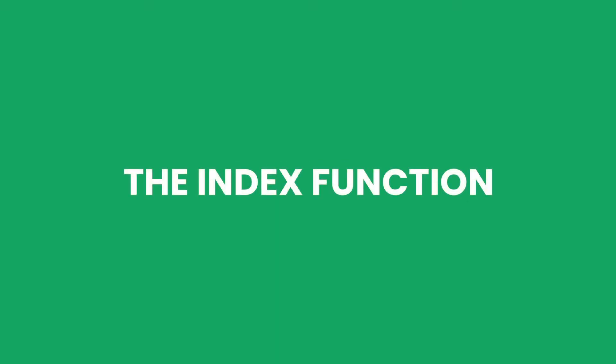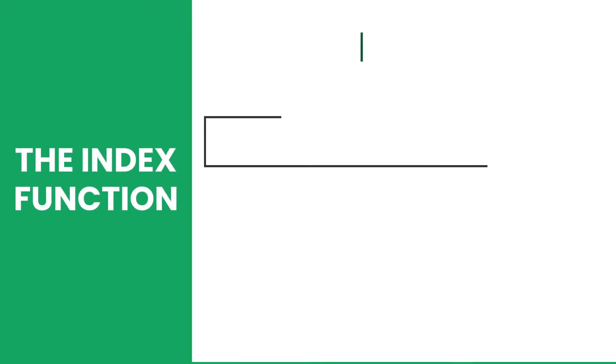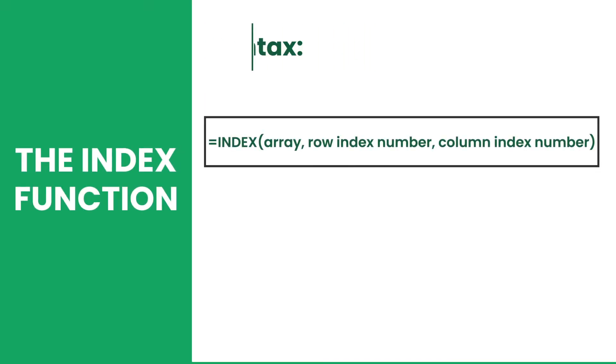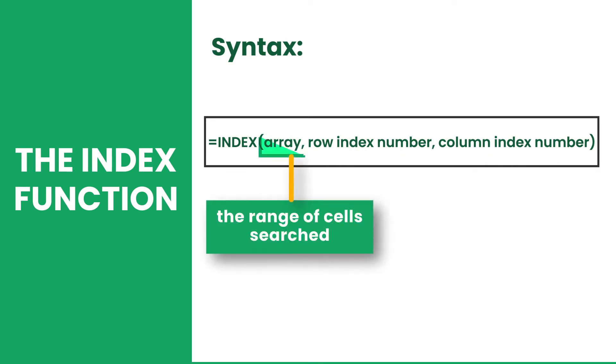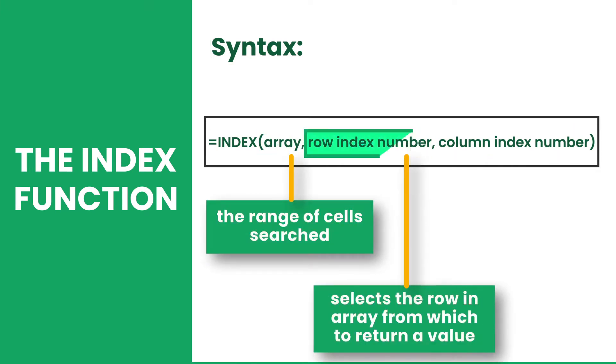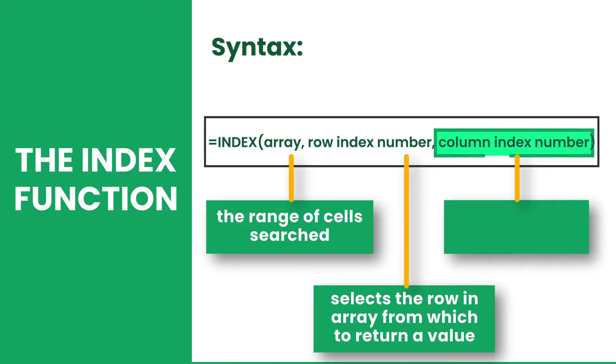INDEX returns a value inside a table or an array and it runs on three arguments: array, row index number, and column number.